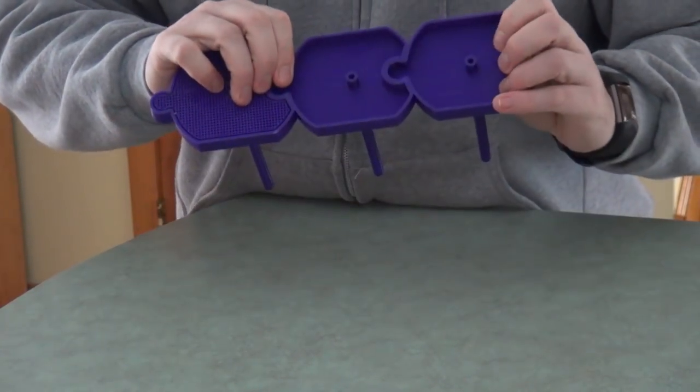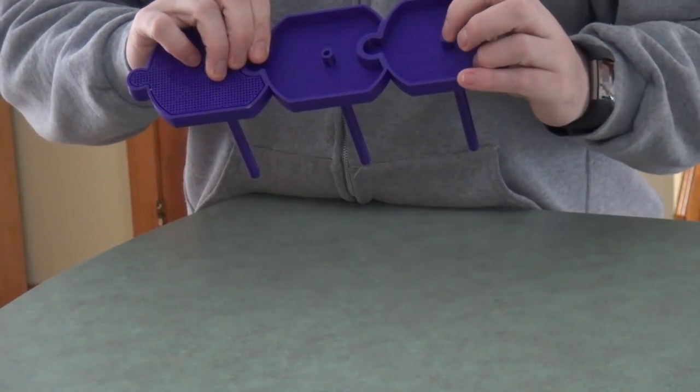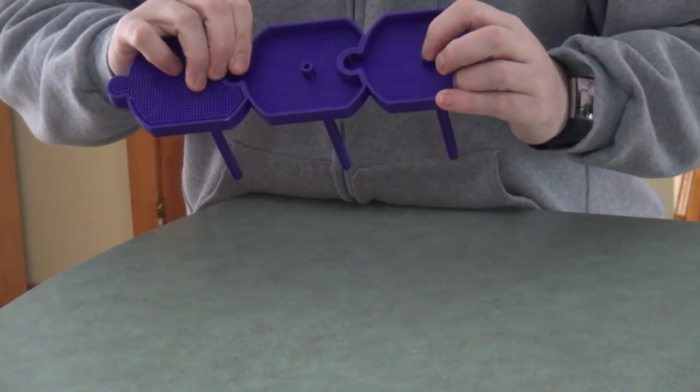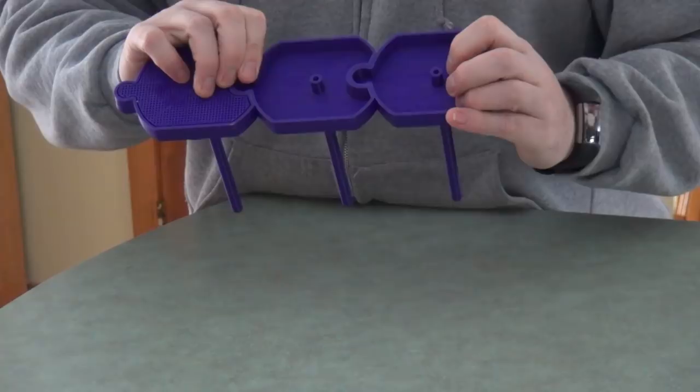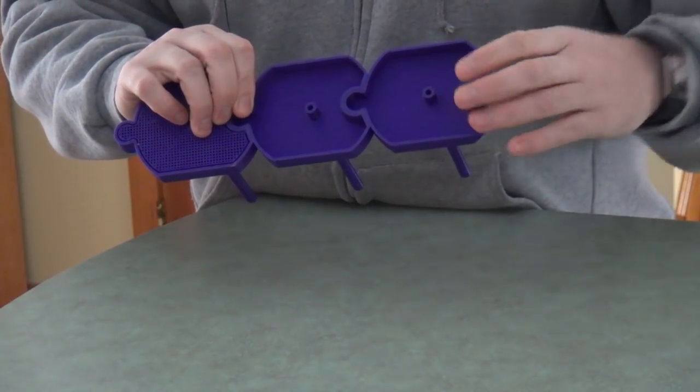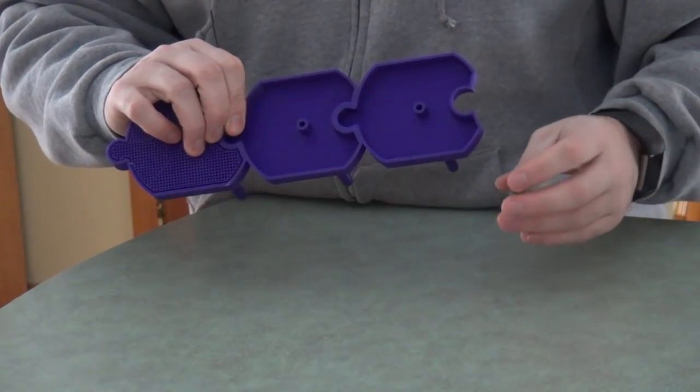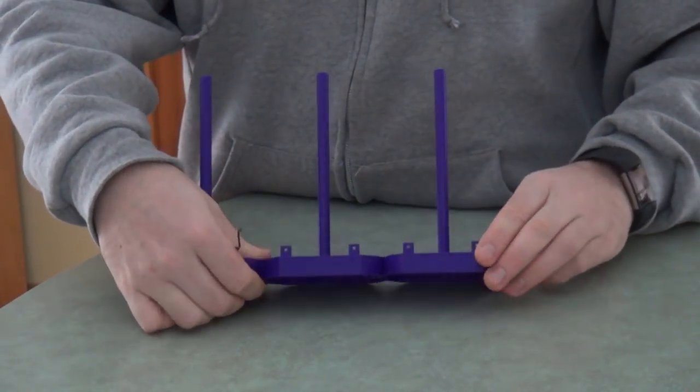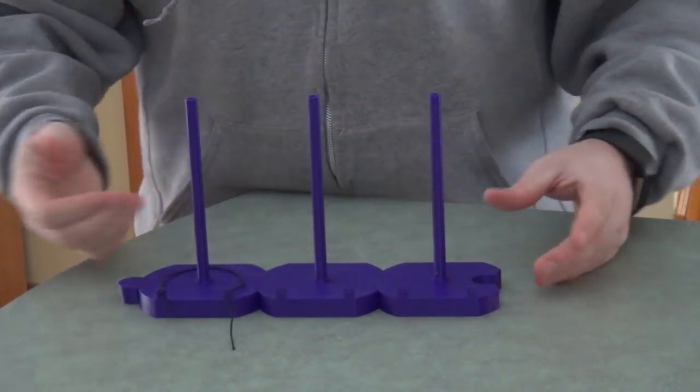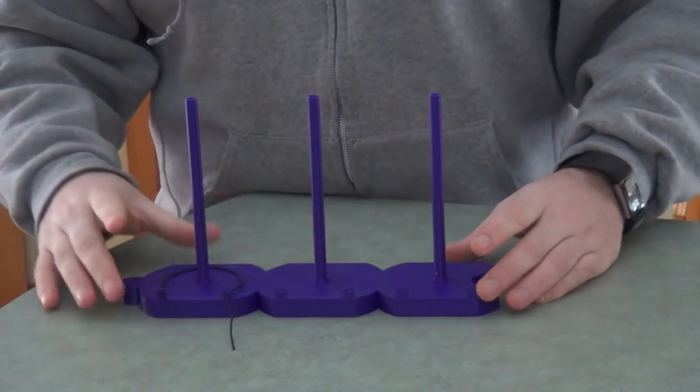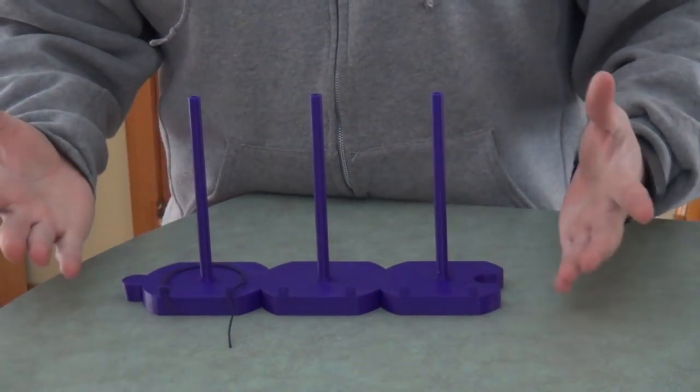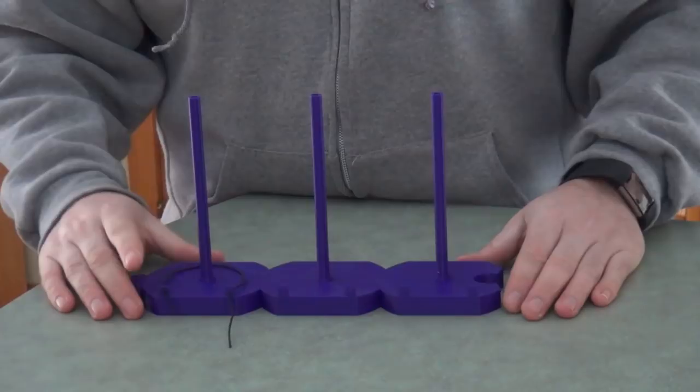Also on the bottoms, there are some holes that would fit, I think it's a number six screw. That means that if you wanted to, you could put a board underneath there and put some screws into these to hold it together even better and maybe add a little more weight. But I find that with three of these, they stay in place pretty well on most surfaces.